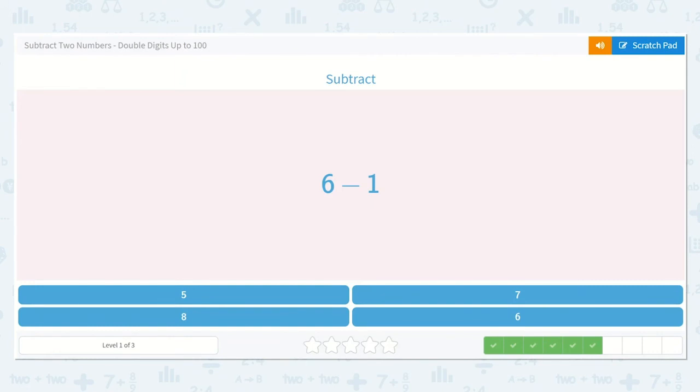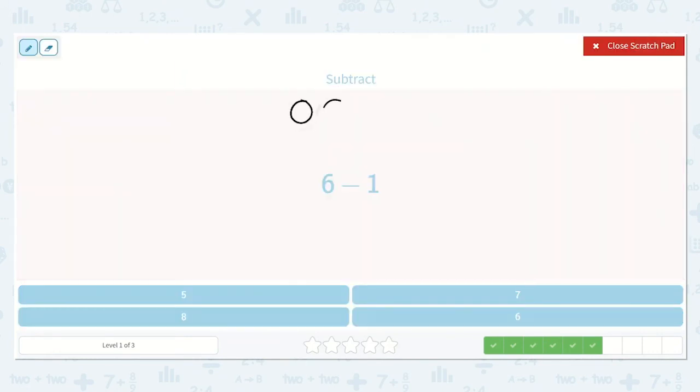Next, we have 6 minus 1: 1, 2, 3, 4, 5, 6. And I'm going to subtract 1. I'm left with 1, 2, 3, 4, 5. 6 minus 1 is equal to 5.